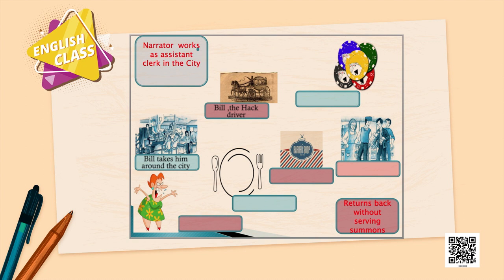They start with Fritz's shop. And after that they visit Gustav's and Grace's barber shop — those are the two barber shops mentioned in the story. And then they have lunch at Wade's hill. They then go to Oliver's mother's place. The narrator then returns back without serving the summons — they visit a lot of places but return without serving summons.